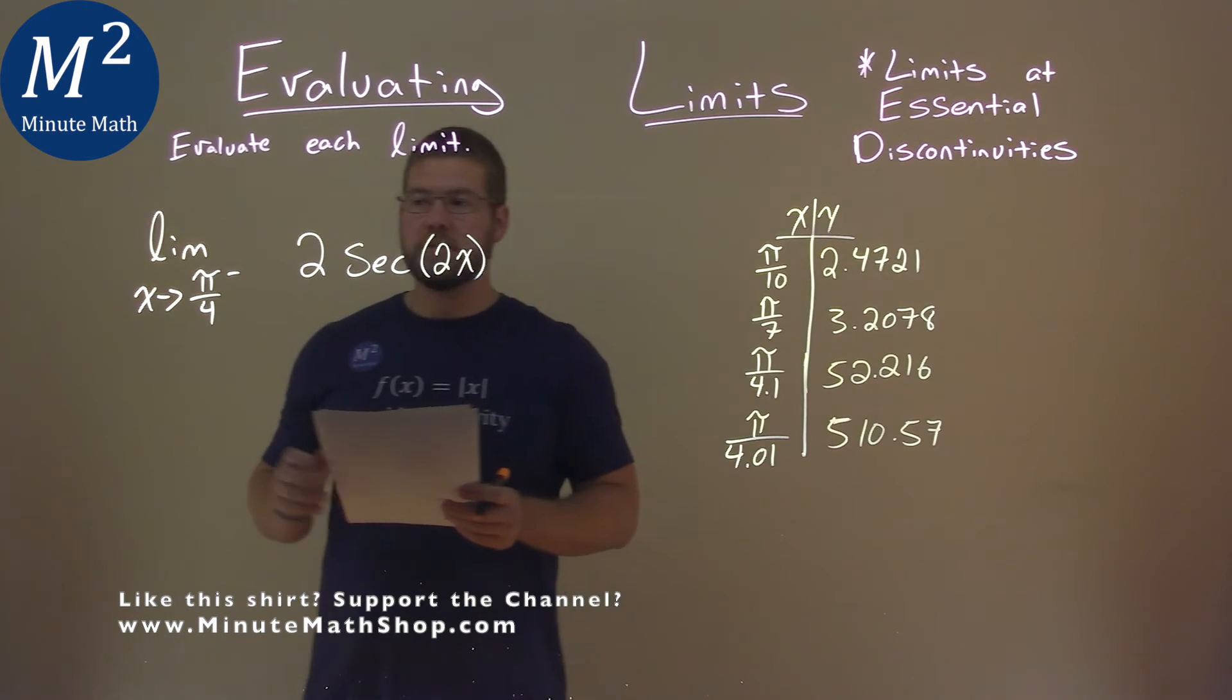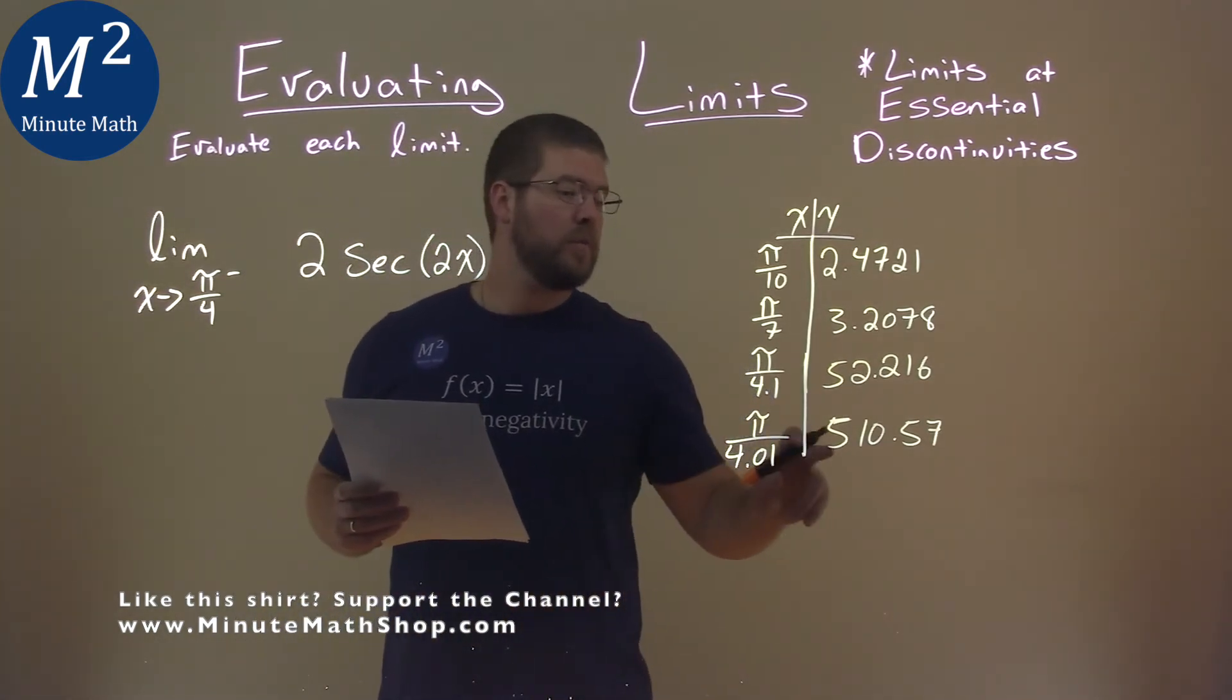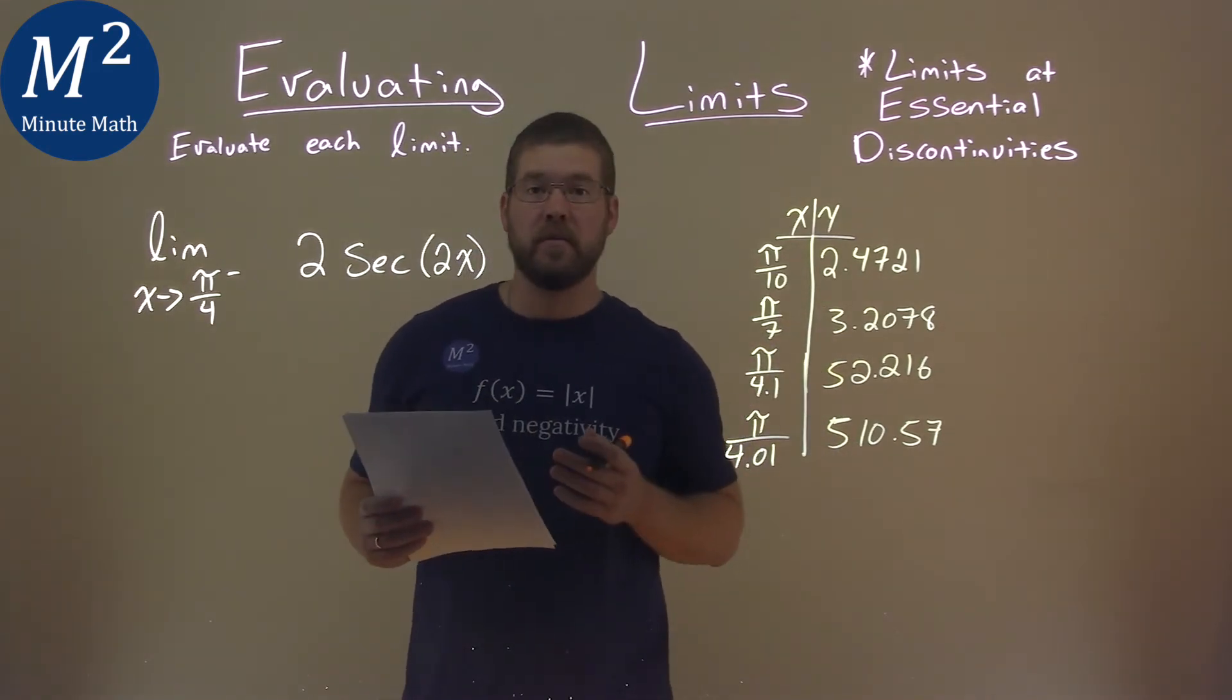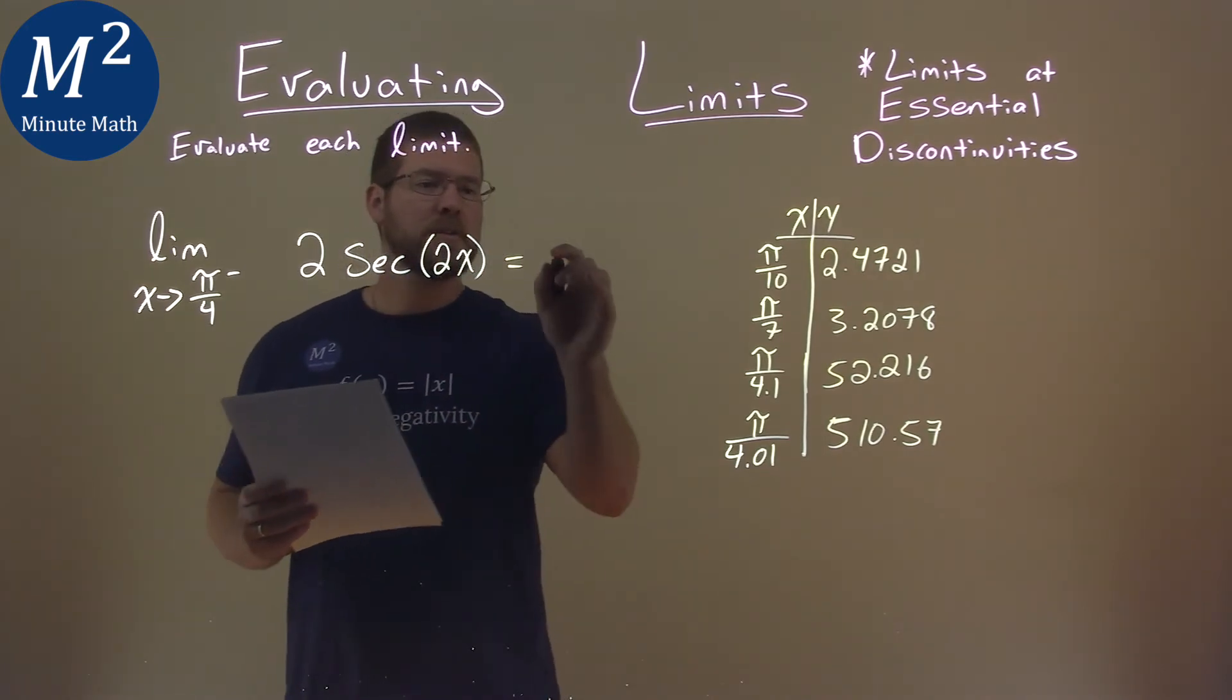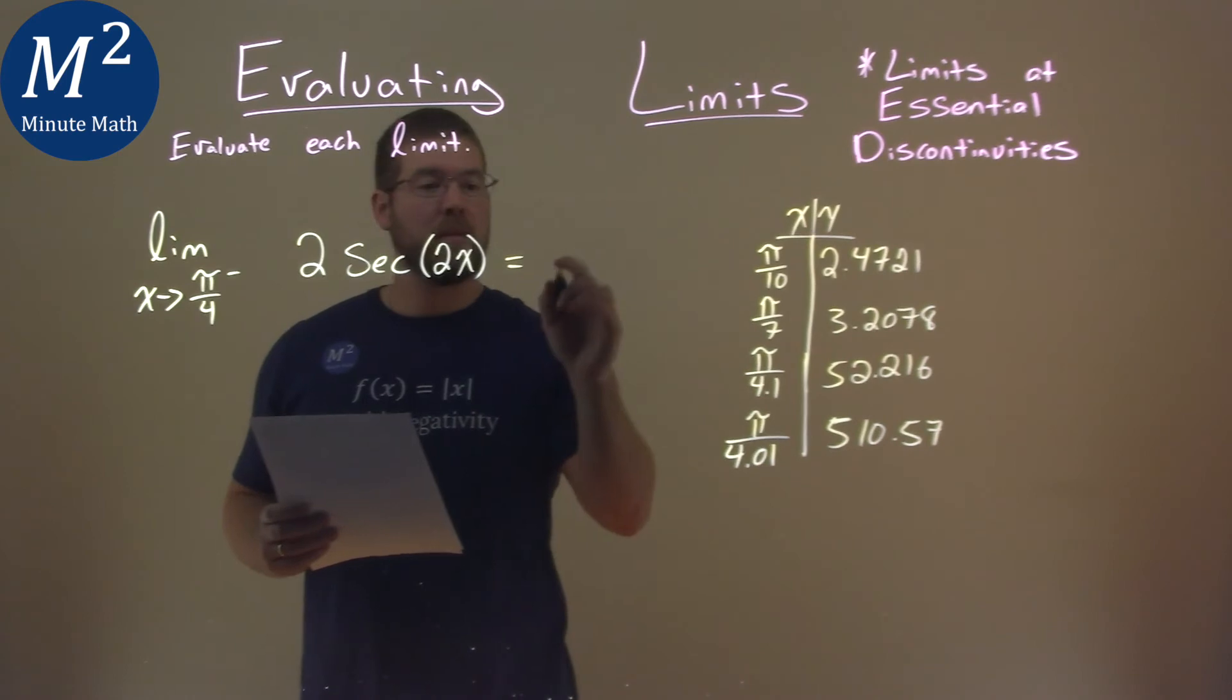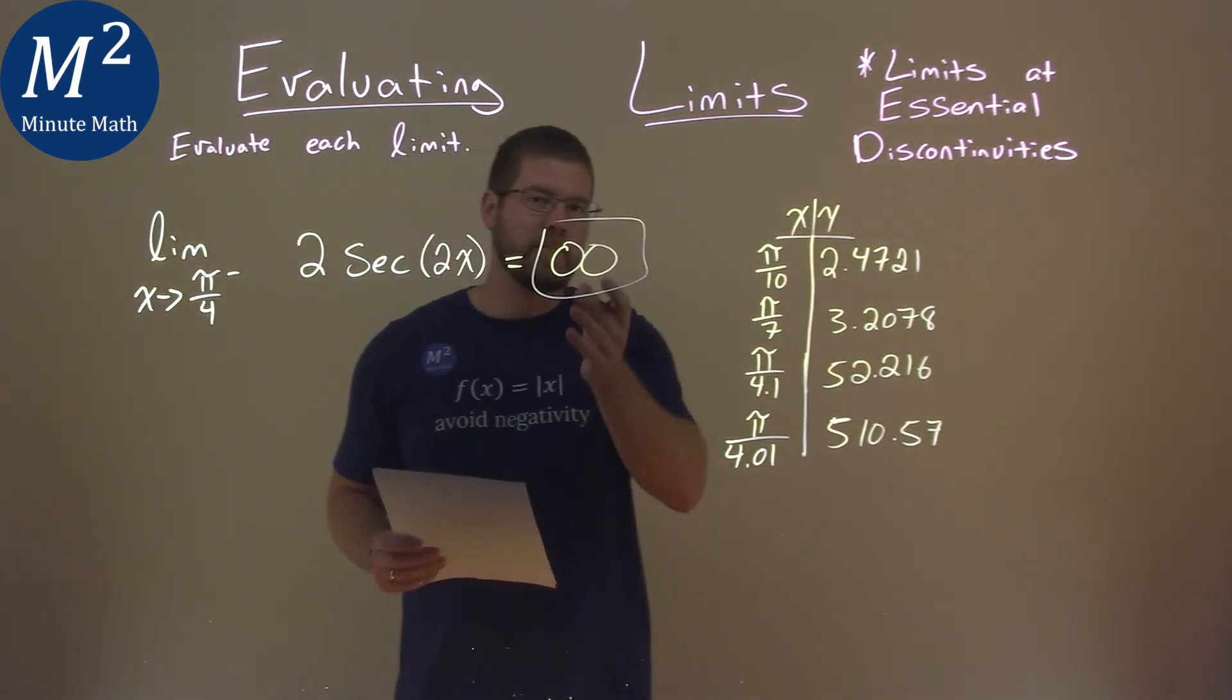So what happens as we approach pi over 4 from the left here, when we're plugging in for x? We notice that our graph, or equation set, is going to positive infinity there. And so the limit of our function 2 secant of 2x as x approaches pi over 4 from the left is positive infinity, and that is our final answer.